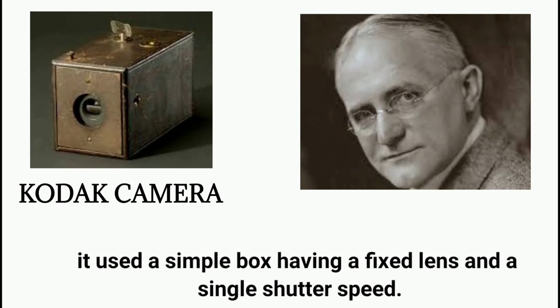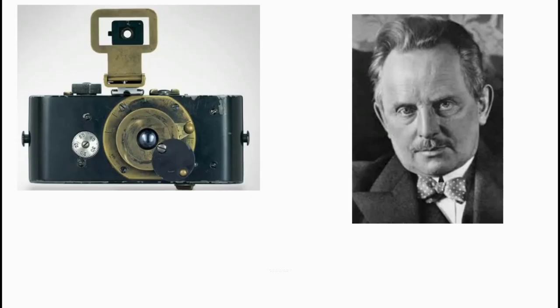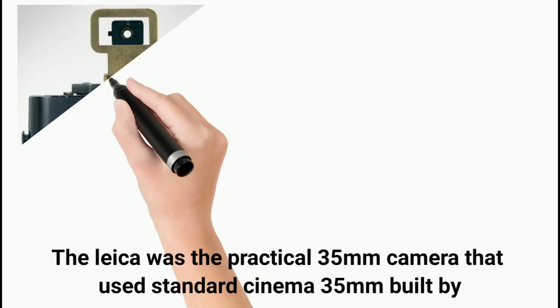The Leica was the practical 35mm camera that used standard cinema 35mm film, built by Oscar Barnack in 1913. Its frame was 24x36mm and it was best suited for landscape photos.